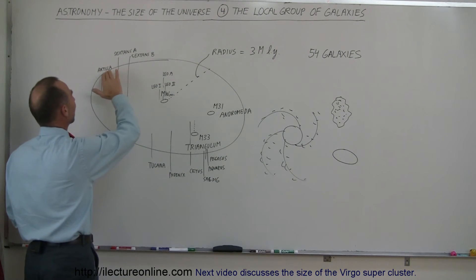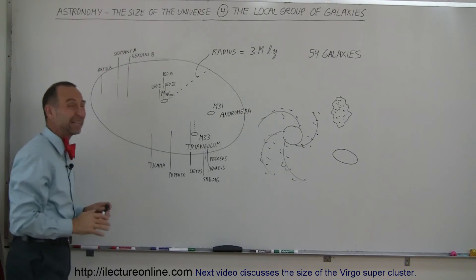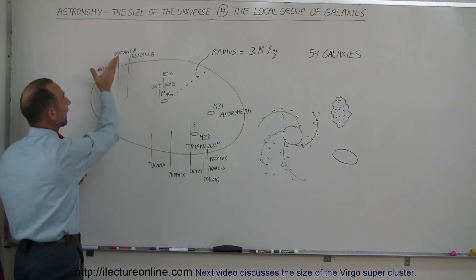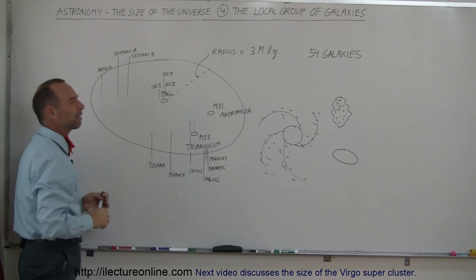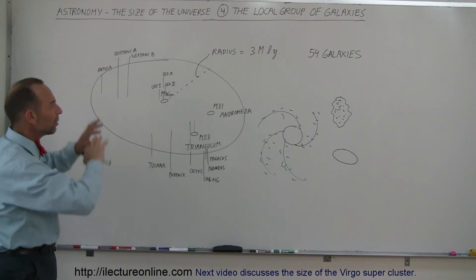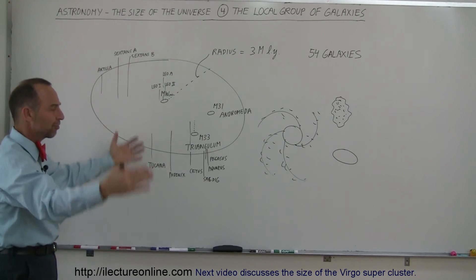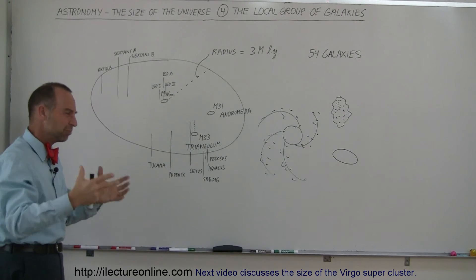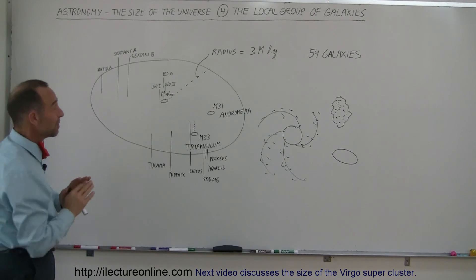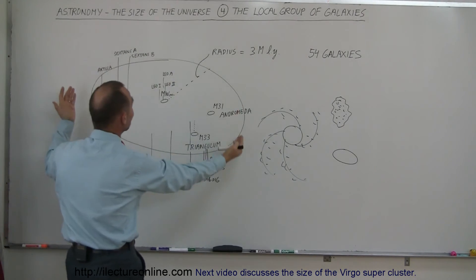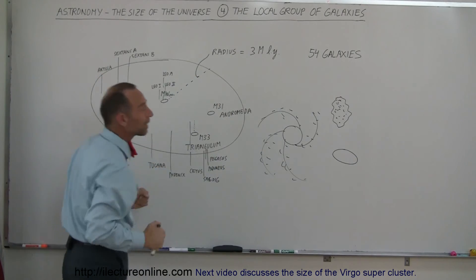So on the other side, we have Antilla, we have Sextans A and B. Those are pretty far away, in the far edges of our little mini group. Those, I believe, are about 4.6 million light years away. So if you draw a sphere with a radius of about 4, 4.5 - million light years, not light years, but million light years - you contain just about all of these 54 galaxies.